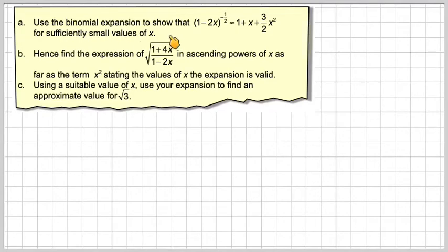Use the binomial expansion to show that (1 - 2x)^(-1/2) is approximately equal to 1 plus x plus 3/2 x squared for sufficiently small values of x.